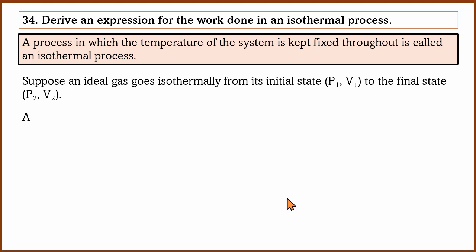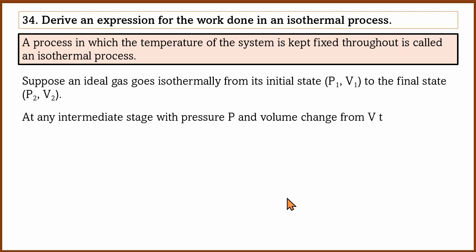At any intermediate stage, the gas has pressure P and volume V, with a small volume change ΔV. The temperature remains the same throughout. The small amount of work done at this stage is ΔW = P·ΔV — pressure multiplied by the small change in volume.